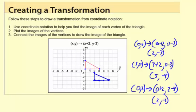So that's how you create a transformation. You find the vertices, you translate those points, and then you translate the segments that connect them.